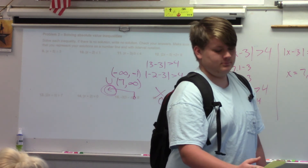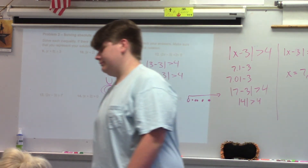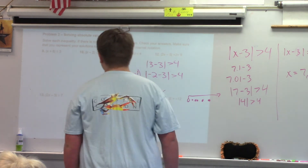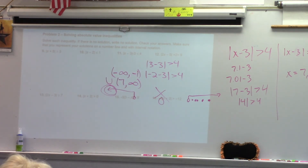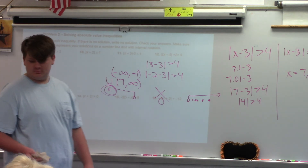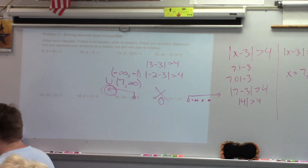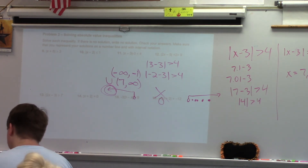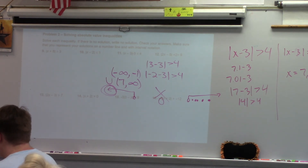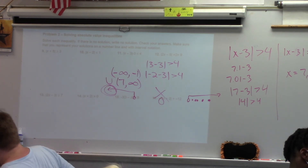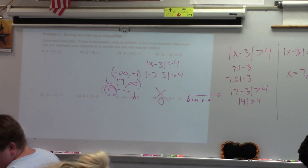Let's look at number 10 quickly. The absolute value of x minus 2 — don't forget to make an equation first. So then x minus 2 equals positive 1 or x minus 2 equals negative 1. Remember, you need to add 2 to both sides: x equals 1 and x equals 3 are your critical values.